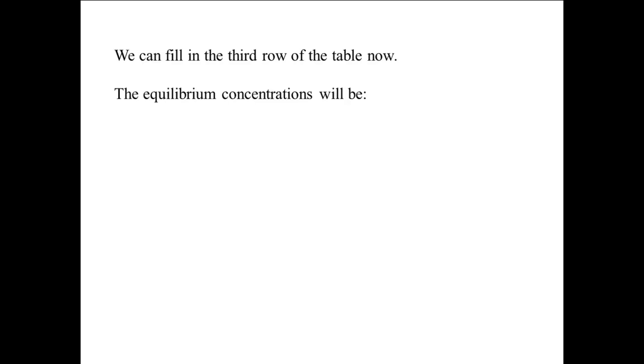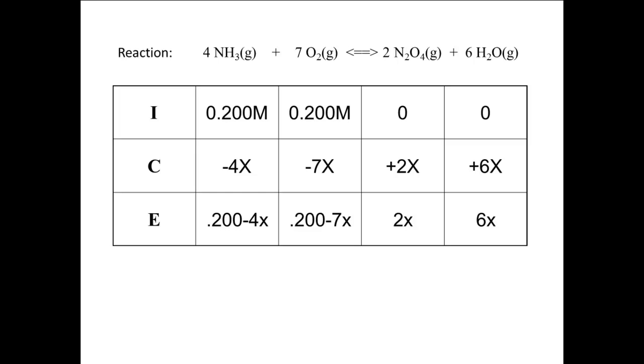We can now fill in the third row of the table. The equilibrium concentrations will be 0.200 minus 4X for NH3, 0.200 minus 7X for O2, 2X for N2O4, and 6X for H2O.